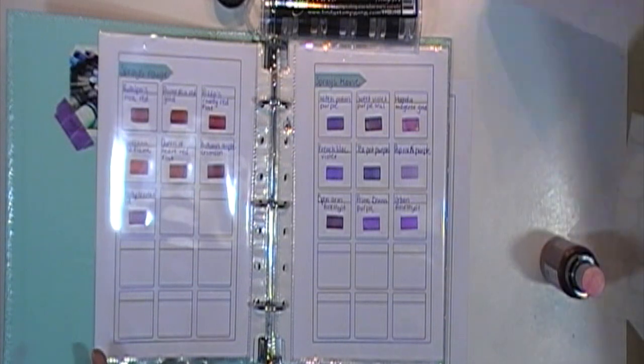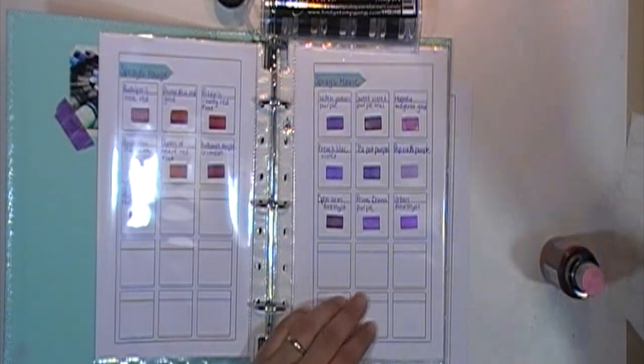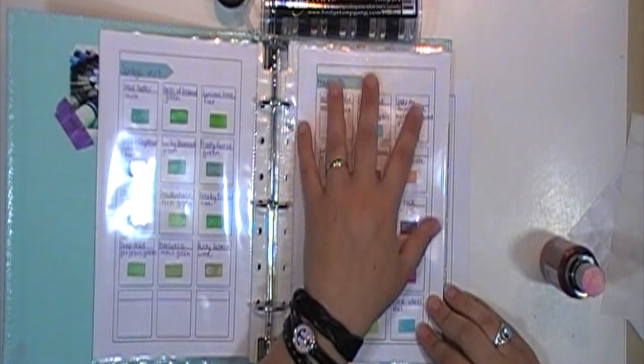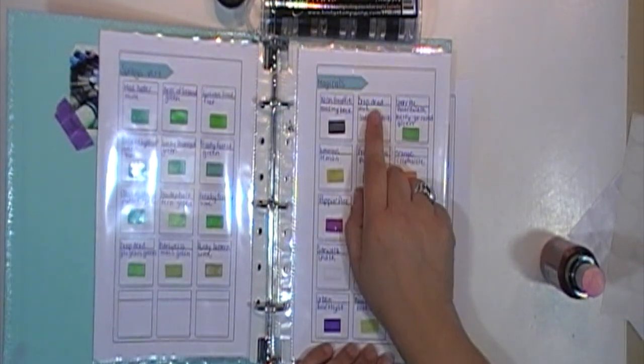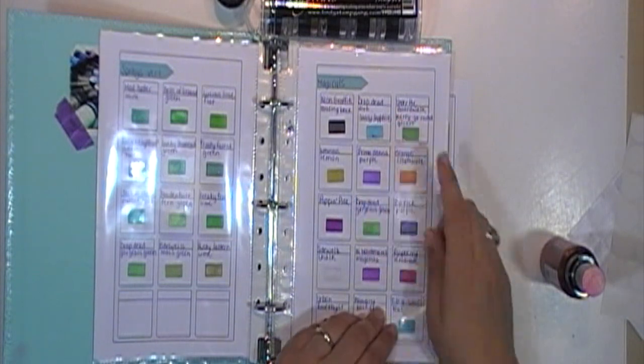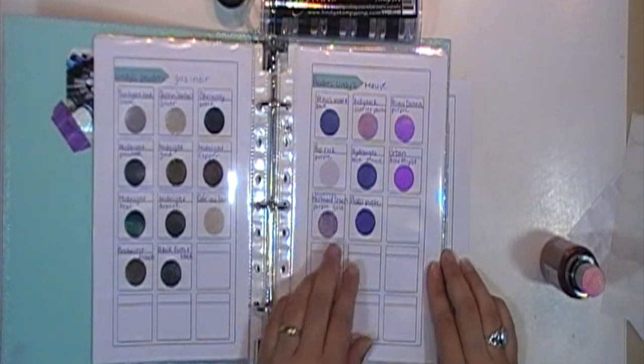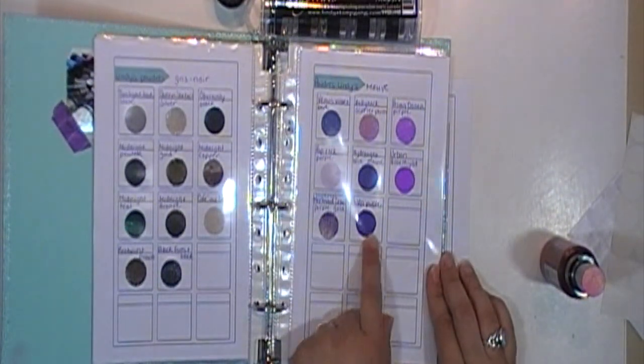I did the same with my magicals and my embossing powders. The magicals are classified by kits. You can see the names above. And the embossing powders are classified by shades.